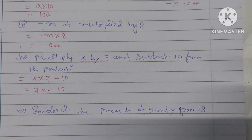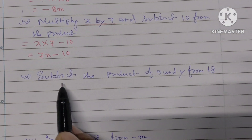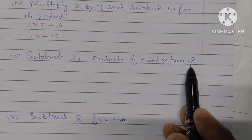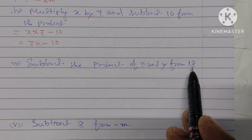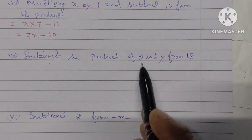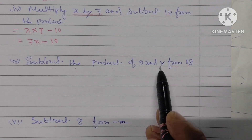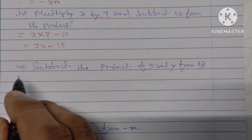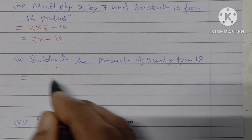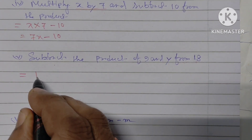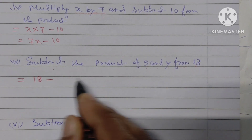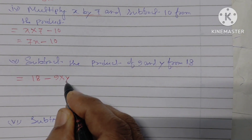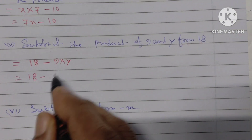Next: subtract the product of 9 and y from 18. The product of 9 and y is 9 into y. So the answer is 18 minus 9y.